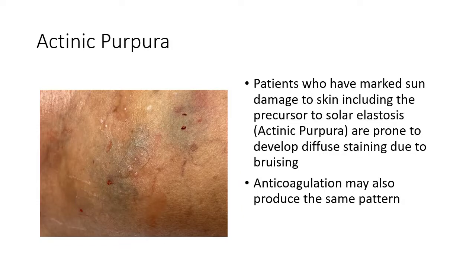Patients who have marked sun damage to the skin, including the precursor to cutaneous elastosis — actinic purpura — are prone to develop diffuse staining due to bruising. Anticoagulation may also produce the same pattern.